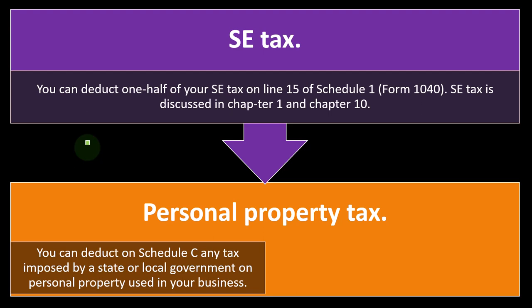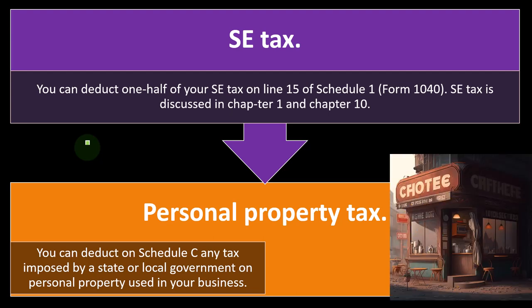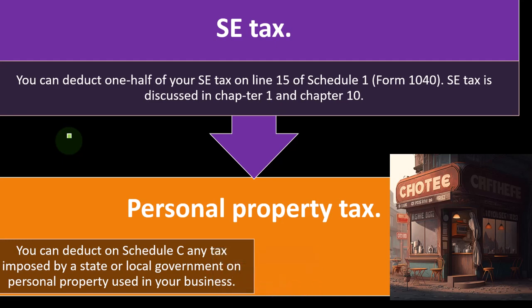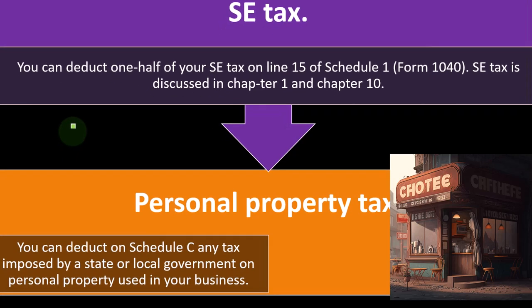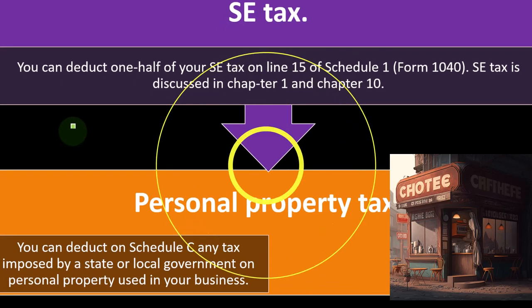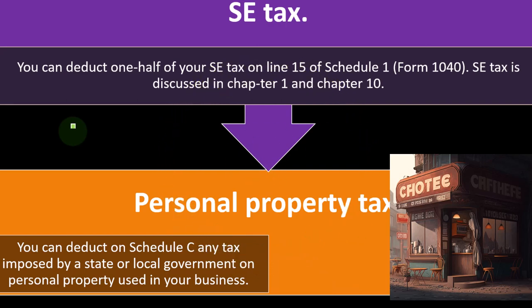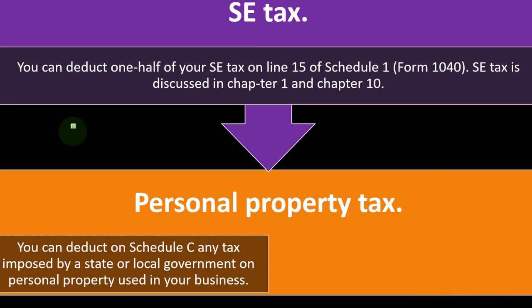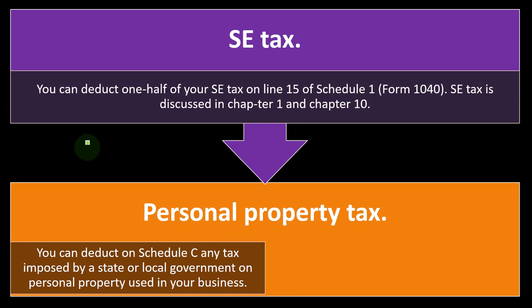For personal property tax, you can deduct on Schedule C any tax imposed by a state or local government on personal property used in your business. This gets a bit complex: property used for business has its property tax deductible on Schedule C. If you're talking about a home used partly for business, you may be able to deduct at least a portion of the property tax through the home office deduction on Schedule C. You can also deduct registration fees for the right to use property within a state or local area.